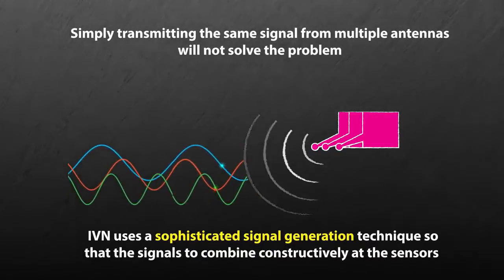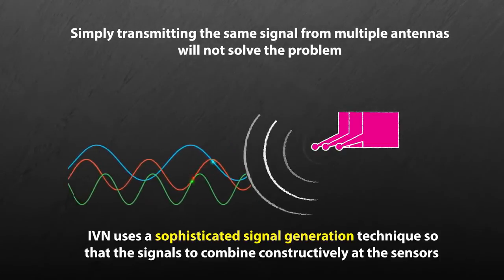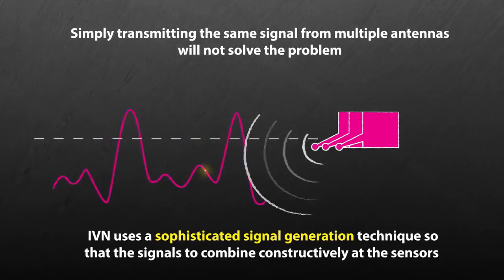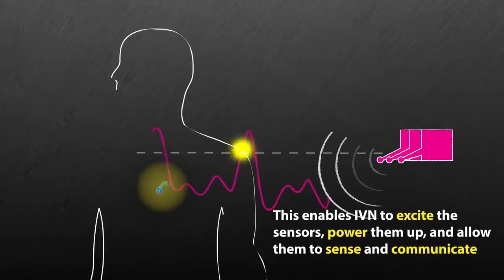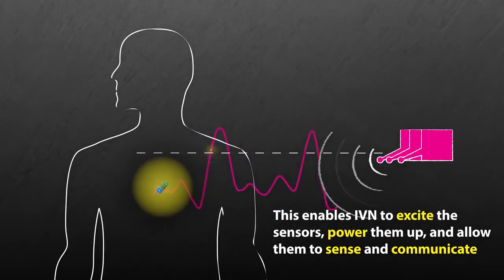IVN uses a sophisticated signal generation technique that allows the signals to combine constructively at the sensors. This enables IVN to excite the sensors, power them up, and allow them to sense and communicate.